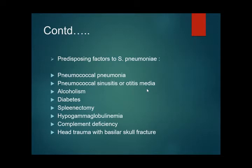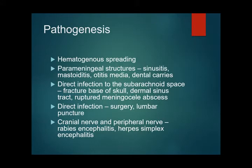The pathogenesis of meningitis may involve hematogenous spreading from a primary source, from parameningeal structures like sinusitis, mastoiditis, or otitis media, and dental caries. It can also be direct infection of the subarachnoid space due to fracture at the base of the skull, from any dermal sinus tract, or from a ruptured meningeal abscess.